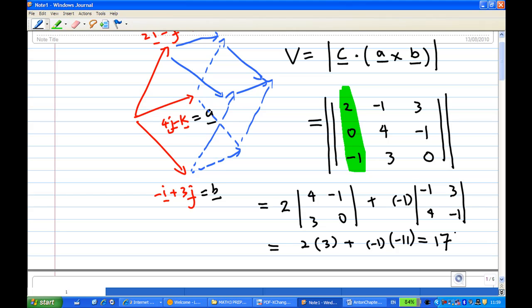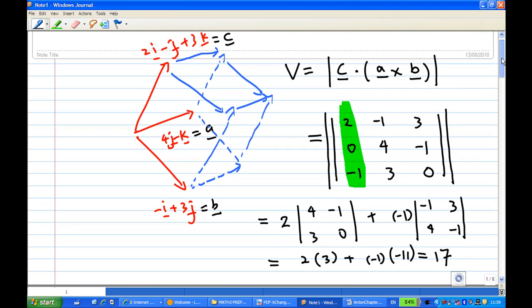Now sometimes you may get a negative value because of the way you arrange your vectors. So remember, you take the absolute value. That is how you find the volume of a parallelepiped. That's the end of the recording.